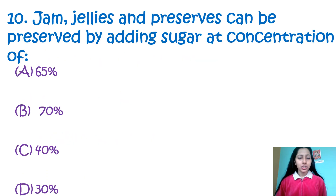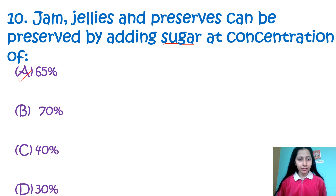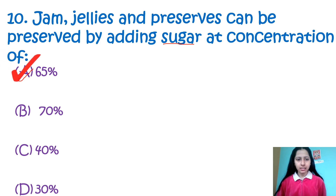Question 10: Jam, jellies and preserves can be preserved by adding sugar at a concentration of 65%, 70%, 40%, or 30%. Sugar is a first-class preservative, and it is used at a concentration of 65% to preserve jam, jellies, and other related food products. So the correct option is A, that is 65%.